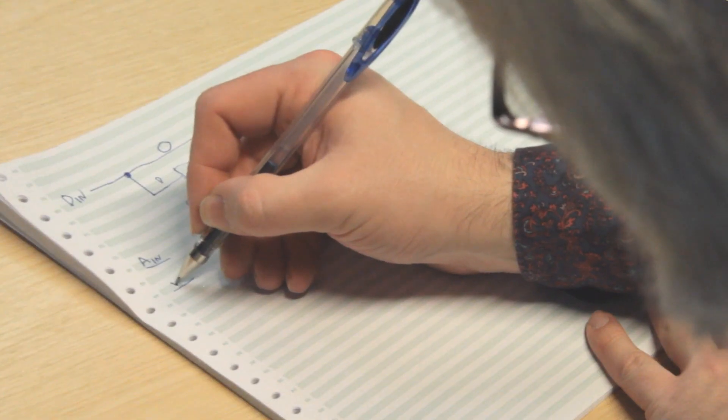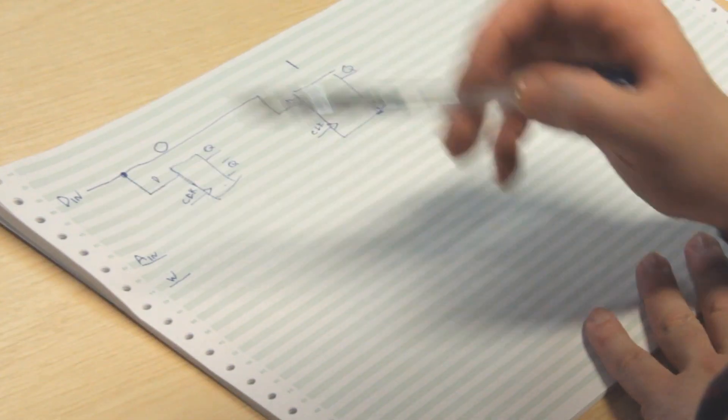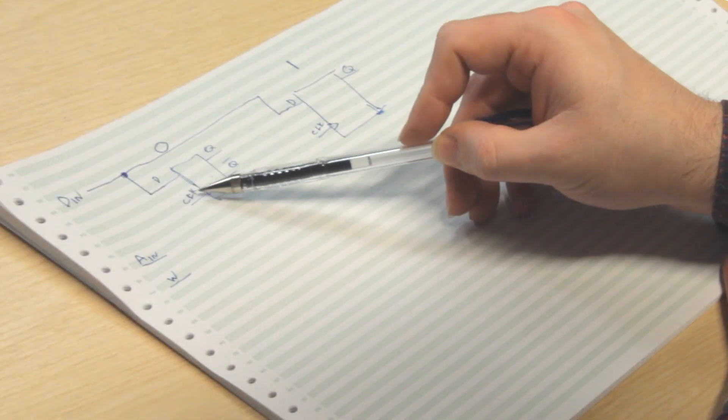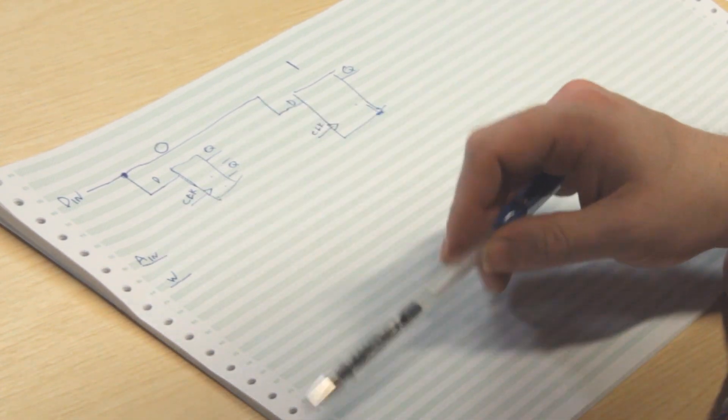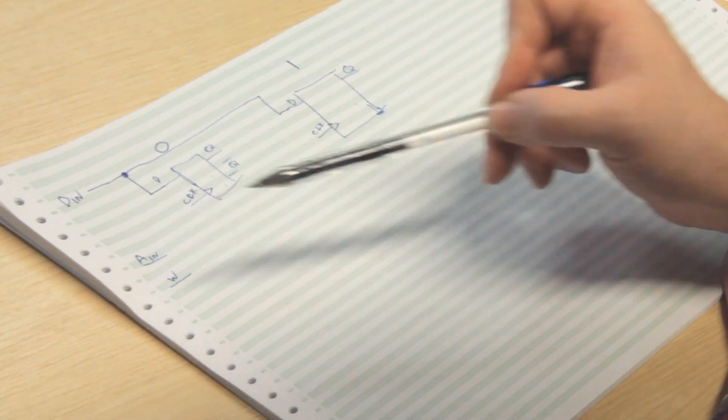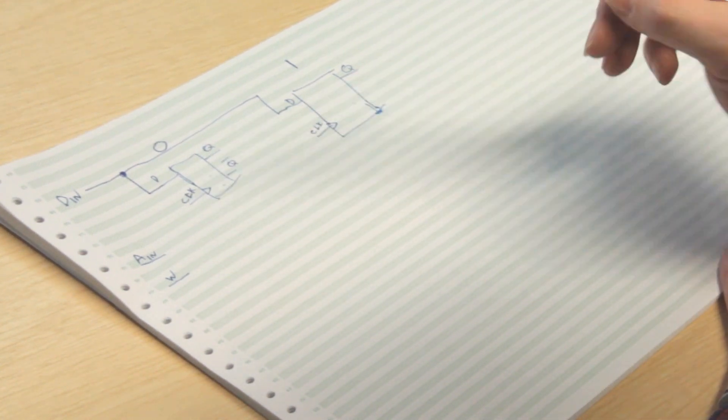We'll also have a signal W, which we'll use to say we want to write whatever bit is in DIN to whichever flip-flop is specified by AIN. So what we want to do is to be able to strobe the input to the zero flip-flop's clock pin when AIN contains zero and W is strobed, or strobe the input on one flip-flop when AIN contains one and W is strobed. So we need to connect, via digital logic again, these inputs to the clock input of flip-flop zero or the clock input of flip-flop one. And to do that, we use our old friend, the AND gate again.